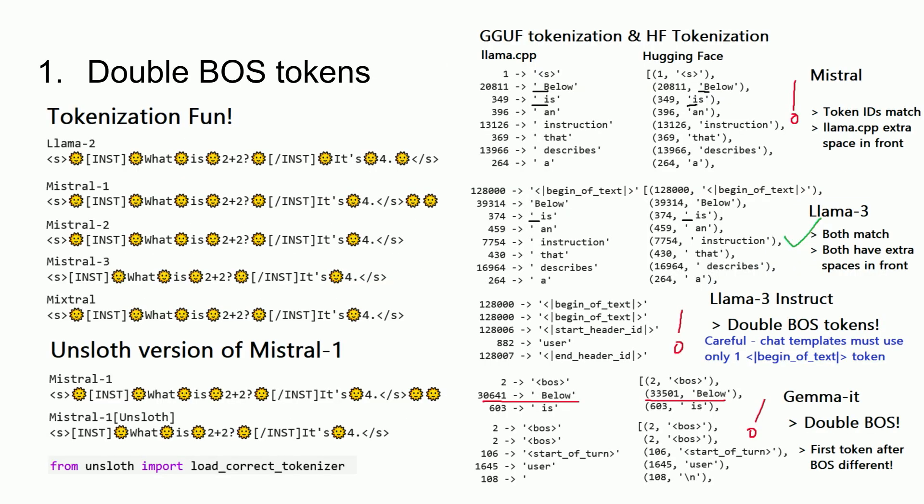The first bug: you must not use double BOS tokens. This is a very common issue in fine-tuning Llama 3. Some people don't realize they're adding two beginning-of-sentence tokens to the fine-tune, which will ruin your fine-tune by lowering inference accuracy. Please check before you fine-tune if you're using double BOS tokens. In Unsloth, we check this automatically and remove the extra BOS token for you. Other models like Mistral and Gemma have this problem too.